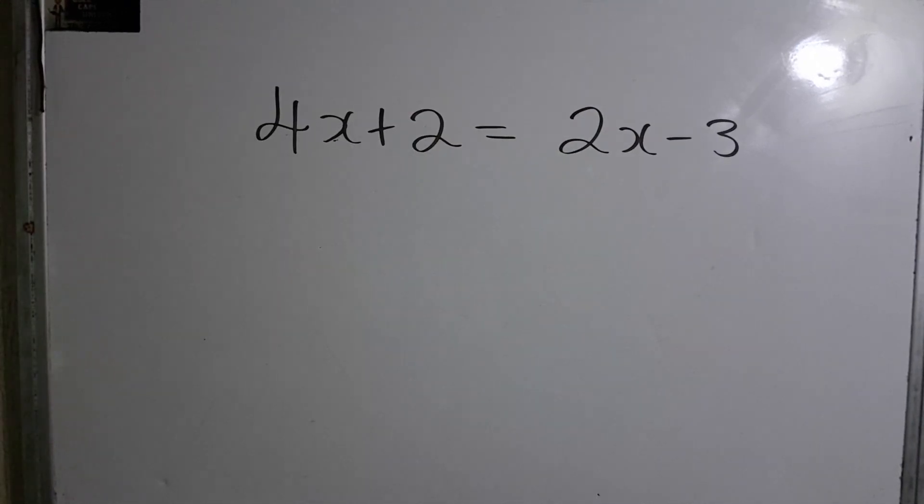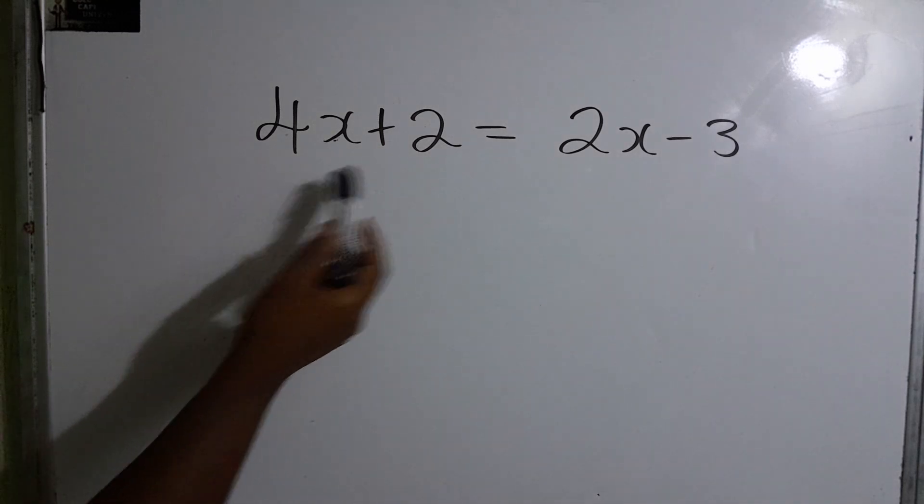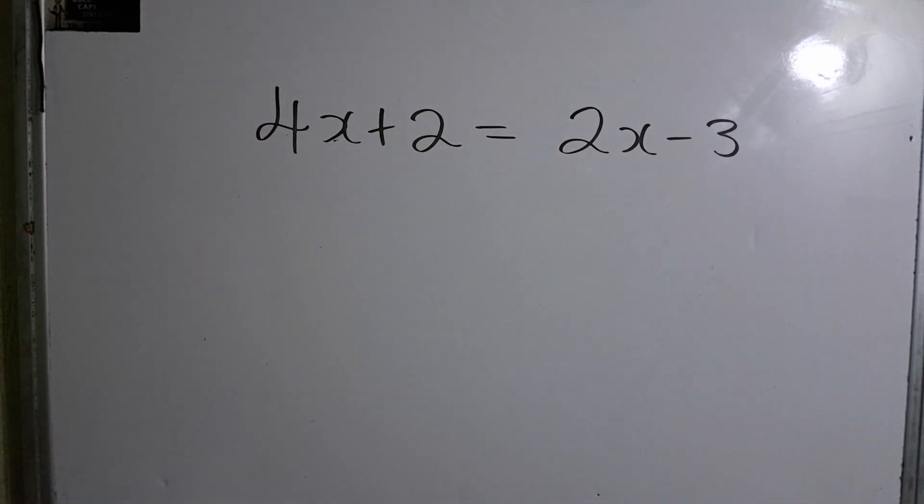Let's look at another. This one says 4x plus 2 is equal to 2x minus 3. This one is different. So what we have to do, we have to group all the x terms and group the numbers.